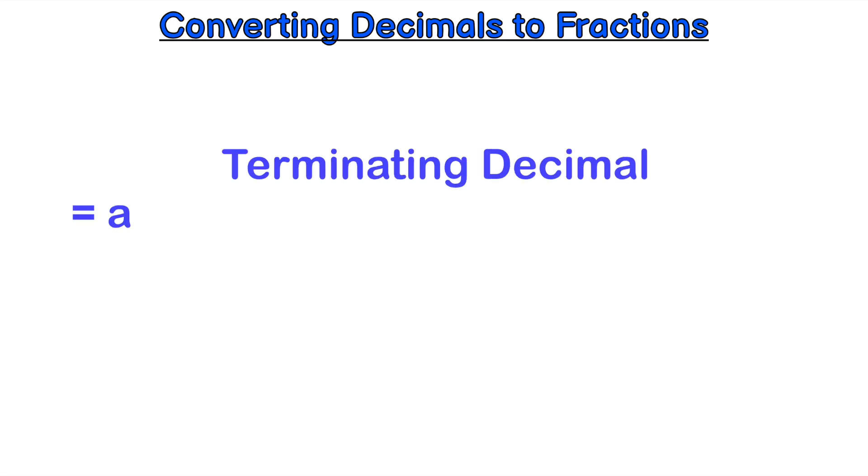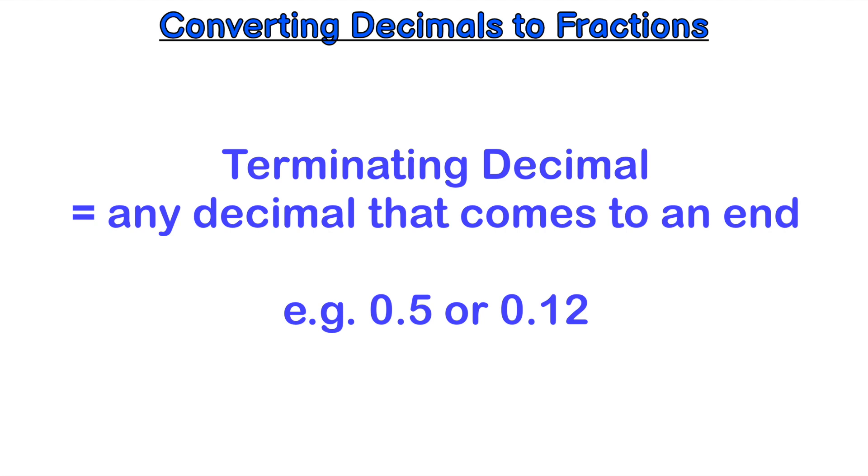A terminating decimal is just any decimal that comes to an end, for example 0.5 or 0.12, so it doesn't carry on forever.